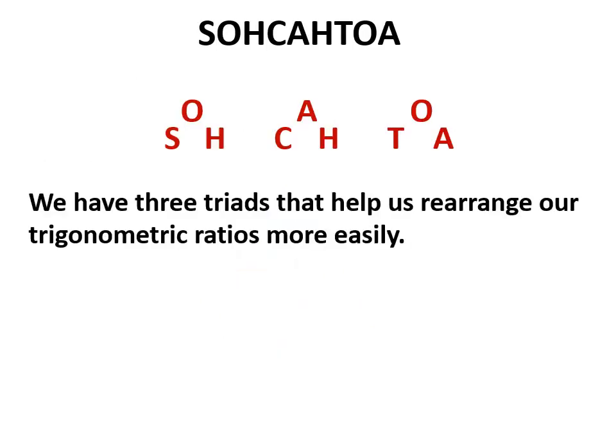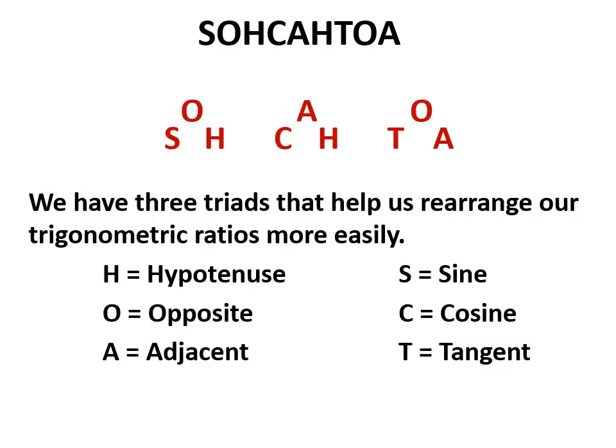We do have to remember what the letters stand for. H, O, and A are our sides: hypotenuse, opposite, and adjacent. S, C, and T are sine, cosine, and tangent — not hard to remember because they appear on our calculator as sin, cos, and tan. One important thing to remember: H, O, and A apply to sides, while sine, cosine, and tangent apply only to angles — they never apply to a side.